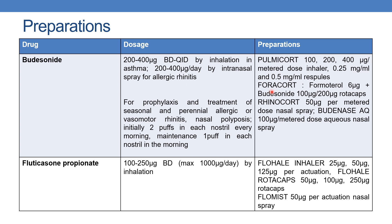The next preparation is Forcocort, which contains formoterol 6 mcg plus budesonide 100 mcg or 200 mcg rotacaps. The next is Rhinocort, which contains 50 mcg per metered dose nasal spray. The next is Budinase AQ, which contains 100 mcg per metered dose aqueous nasal spray.